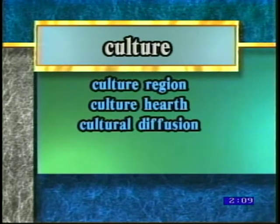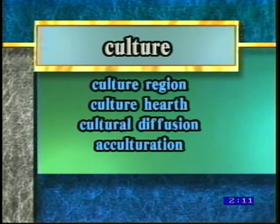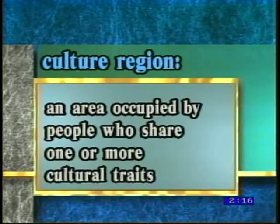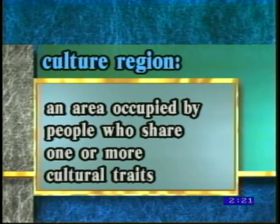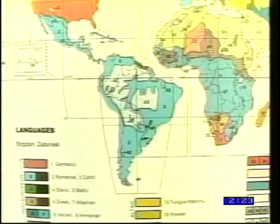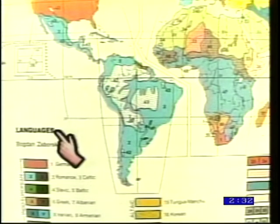When discussing the concept of culture, there are some other terms you should be familiar with. They are culture region, culture heart, cultural diffusion, acculturation, and cultural assimilation. A culture region is an area occupied by people who share one or more cultural traits. For example, all the Spanish-speaking countries in South America form a culture region. Their common cultural trait is their language.